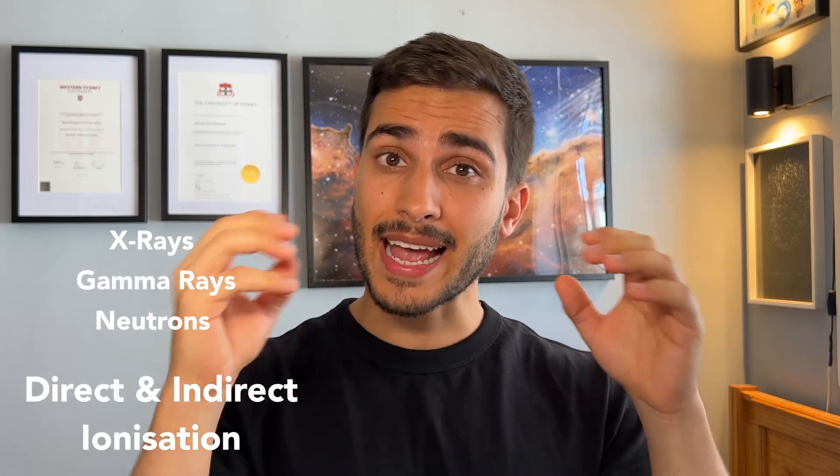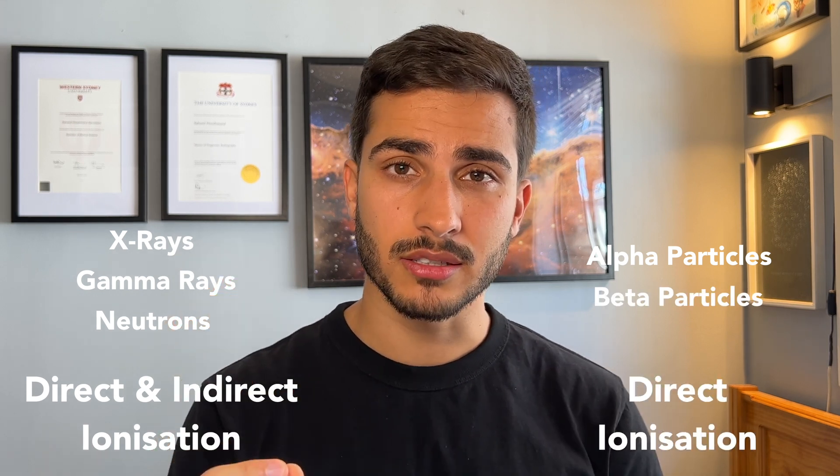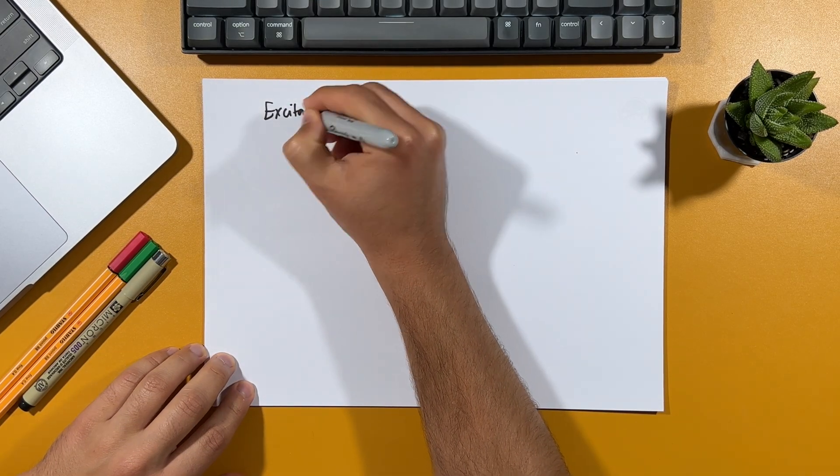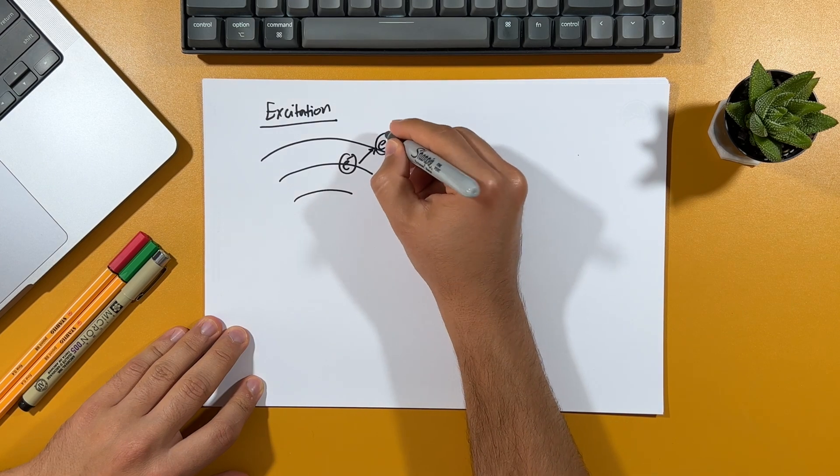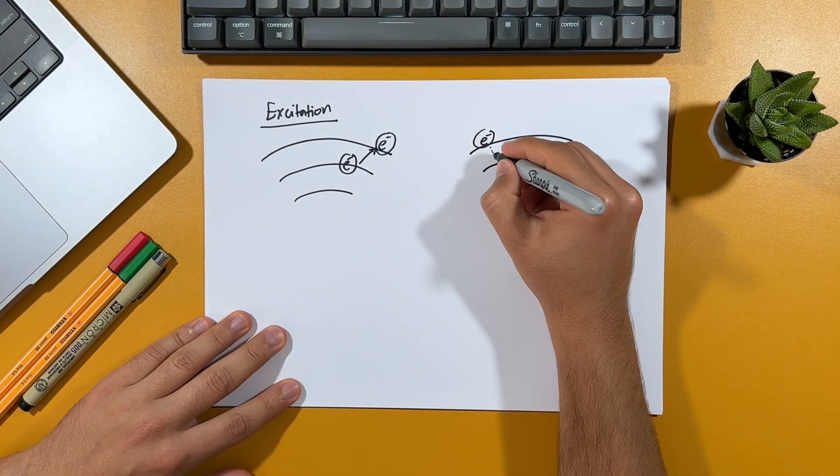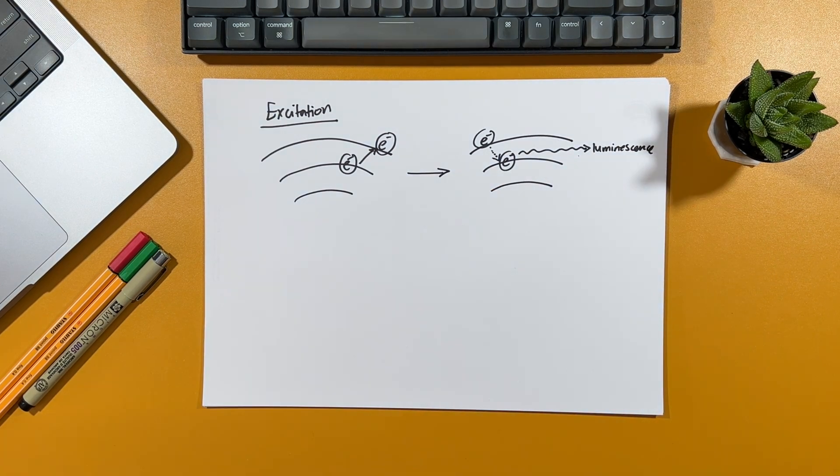X-rays, gamma rays and neutrons are considered to be both direct and indirect, whereas alpha and beta particles are mainly considered to be directly ionizing. If, however, the electron is not removed from the atom and instead receives just the right amount of energy from the X-ray to transfer it up to the outer shell, this is known as excitation. I know, very exciting. When this happens, the electron remains in this high orbit for a short period of time, and as it comes back down to its original shell, it releases some energy in the form of electromagnetic radiation, such as light, which is the basis of luminescence.